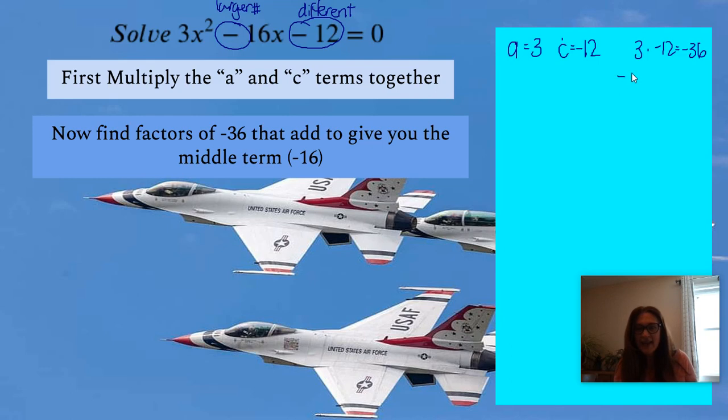Okay, so when we're looking for factors of negative 36, I like to list them in order. So we're going to start with 1. 1 and 36, remembering that the larger number has to be negative. And then I'm going to add those two together to get negative 35. We're not going to use those because we want negative 16.